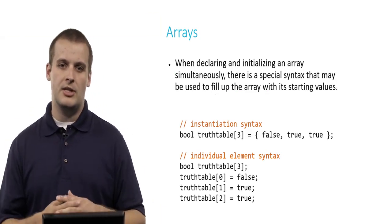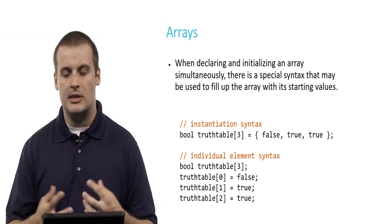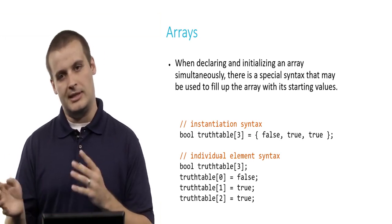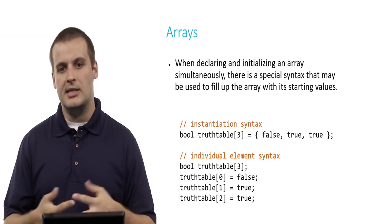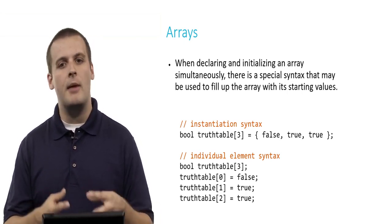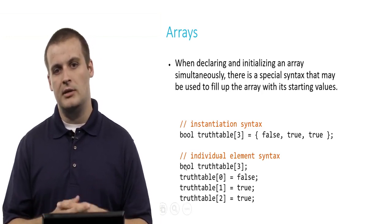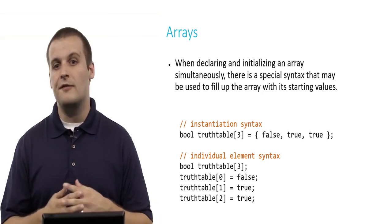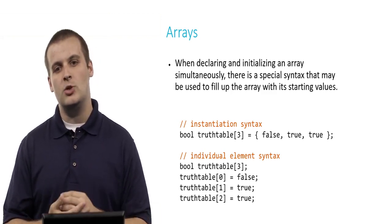When you declare and initialize an array simultaneously, there's a special syntax you can use to fill up the array with its starting values. It can get cumbersome to declare an array of size 100 and then assign each element individually. If it's a small array, you could do something like: 'bool truth_table[3] = {false, true, true}' — comma-separated values inside curly braces. This creates an array of size 3 called truth_table with elements false, true, and true. This instantiation syntax produces the exact same array as doing the individual element assignments below.